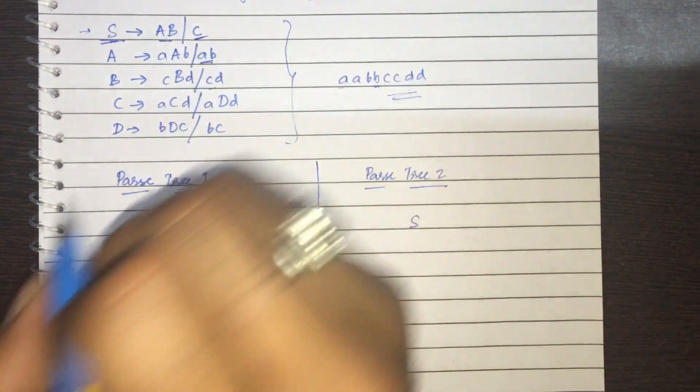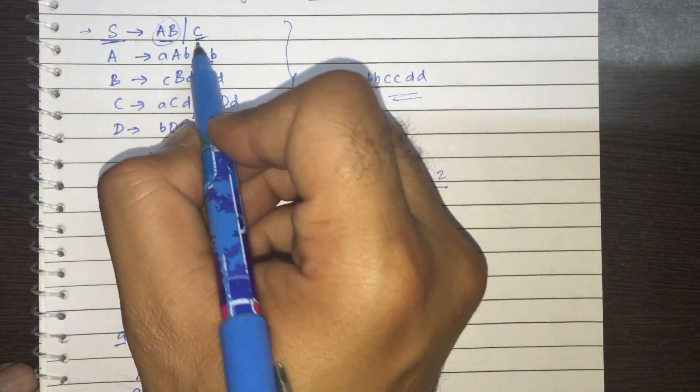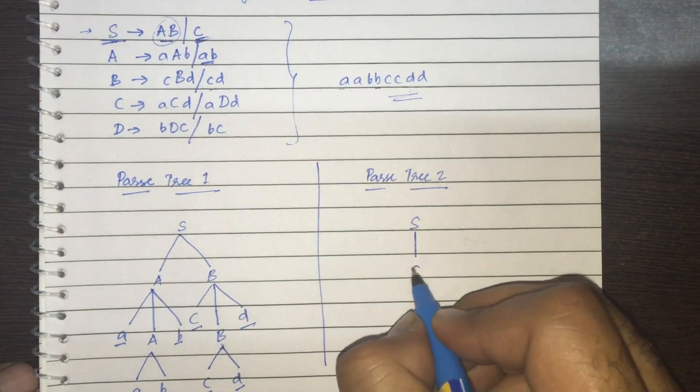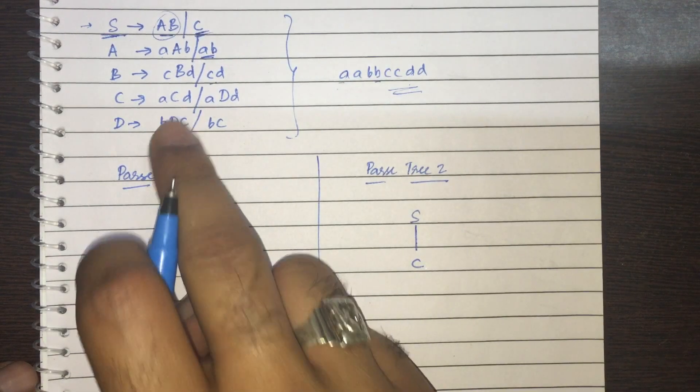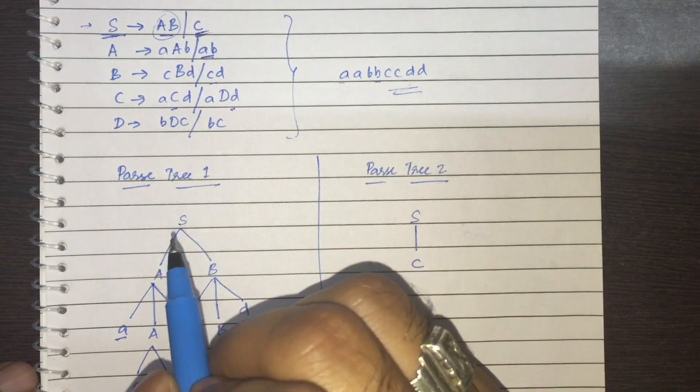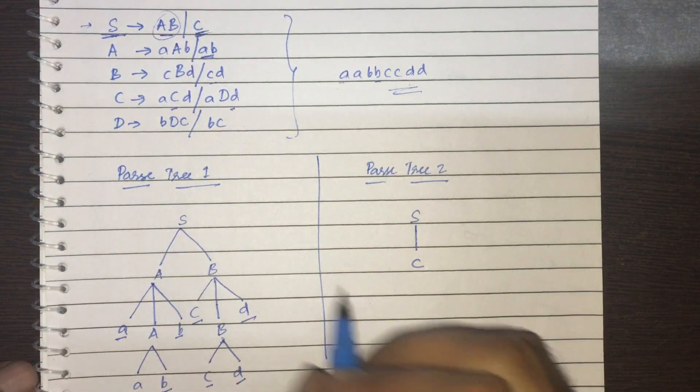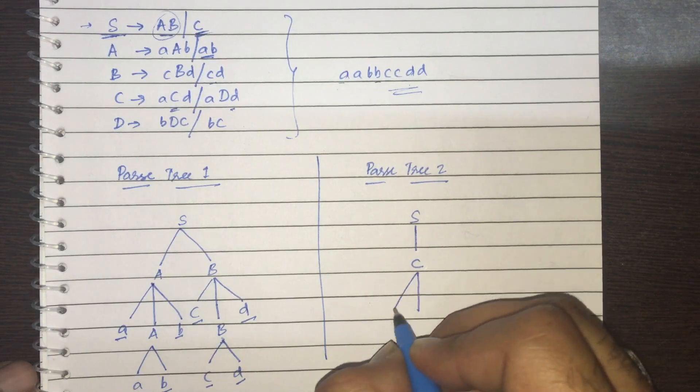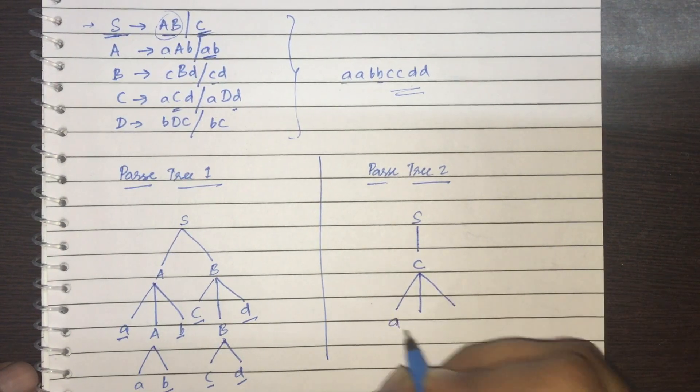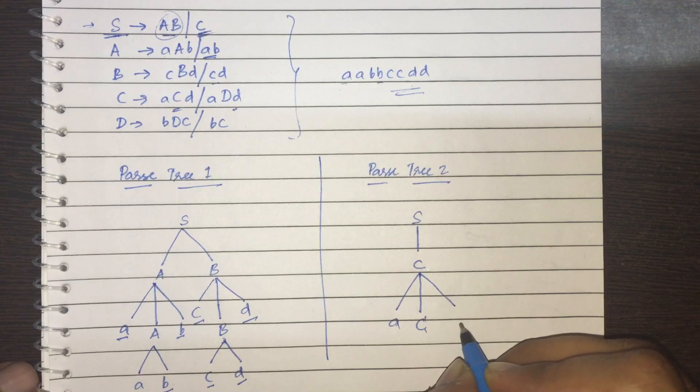So this time I'll consider this one. I'll not go with this. I'll go with this. You get C. And C has what? These two productions. A, C, D and A, D, D. So let me go with the first one. So C gives three things. A, C, D.